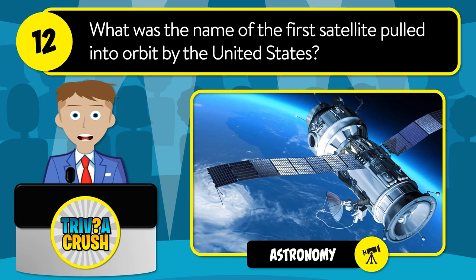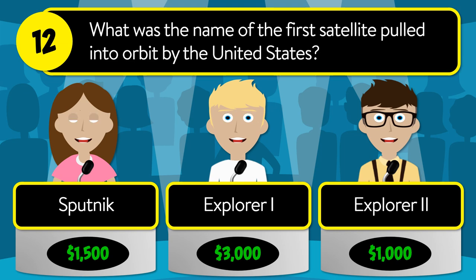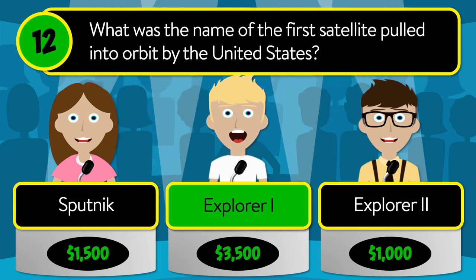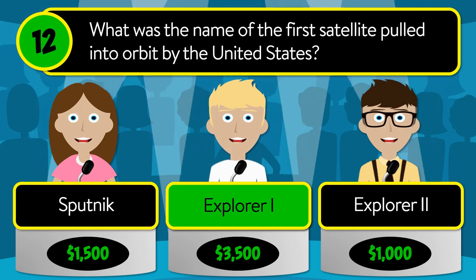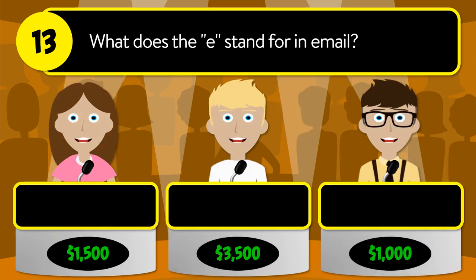Question number twelve: what was the name of the first satellite put into orbit by the United States? Was it Sputnik, Explorer One, or Explorer Two? The correct answer is Explorer One.